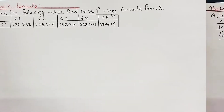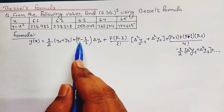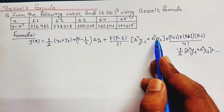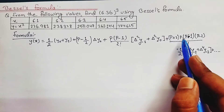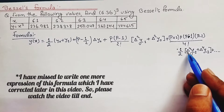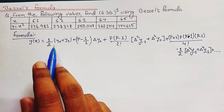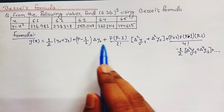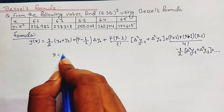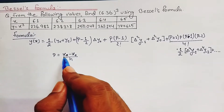Our Bessel's formula is: y(x) = (1/2)(y₀ + y₁) + (p − 1/2)·Δy₀ + [p(p−1)/2!]·(1/2)(Δ²y₋₁ + Δ²y₀) + [(p+1)p(p−1)(p−2)/4!]·(1/2)(Δ⁴y₋₁ + Δ⁴y₋₂). Later in this video I will show you how to calculate Δ²y₋₁, Δy₀, and what p is. We have p = (x − x₀) / h.